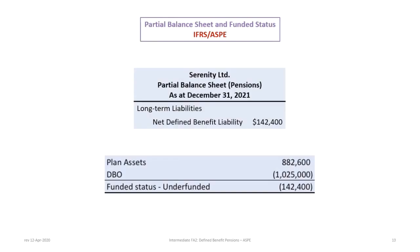Even though it wasn't a requirement, I've included the partial balance sheet and funded status. This is the same as under IFRS — we still have a long-term liability, net defined benefit liability of $142,400. The funded status is calculated the same way, as the difference between the DBO and the plan assets.